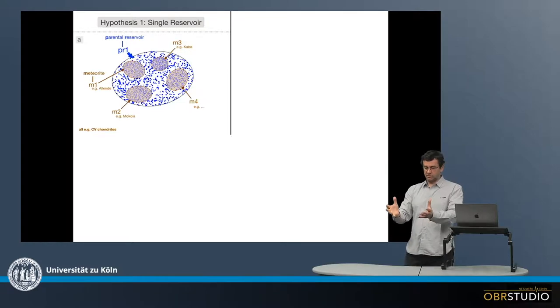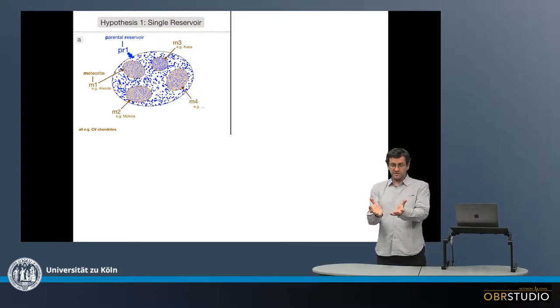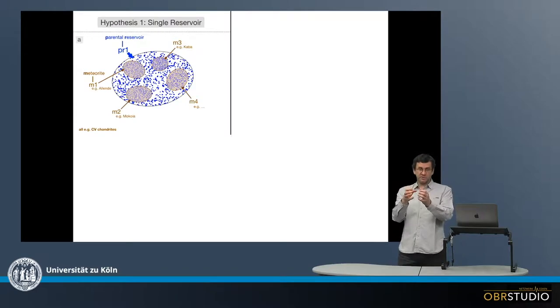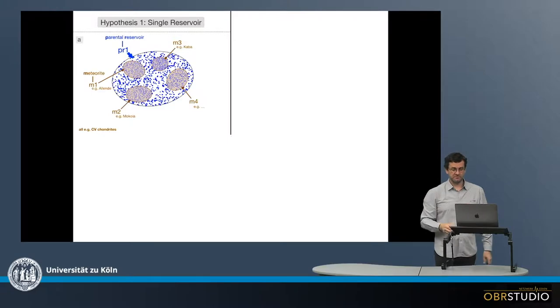Now, in this first case, there's just one volume basically within the reservoir. And in this volume, chondrules form and from all these chondrules, the various parent bodies and meteorites form, so Allende forms from this reservoir, Mokoya, Kaba and so on. So forming means aggregating the chondrules.